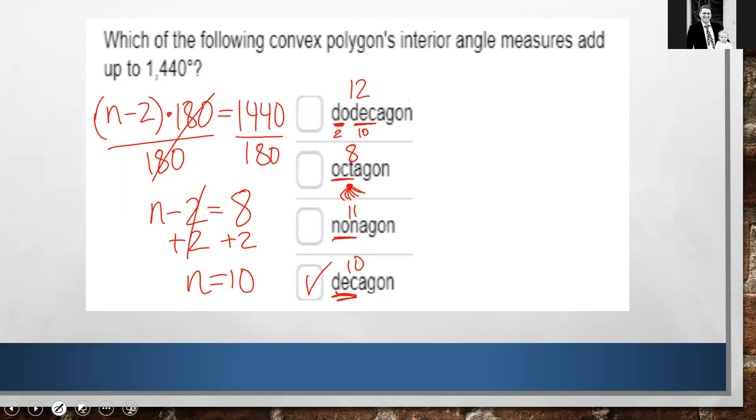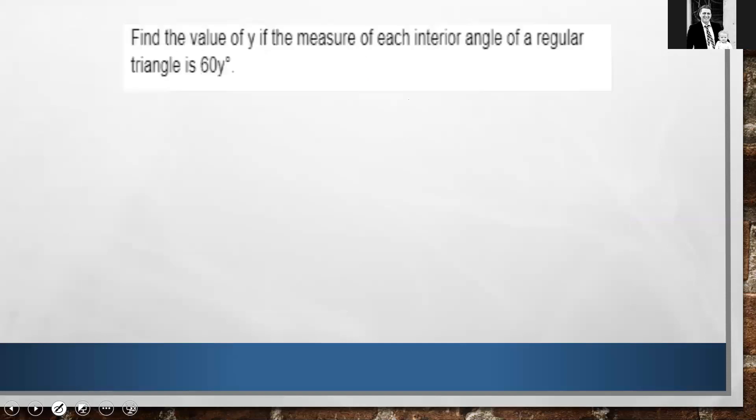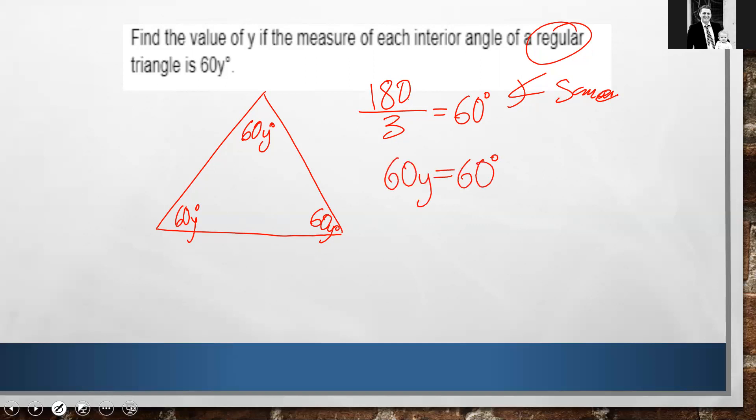Now let's find the value of y in the measure of each interior, if the measure of each interior angle of a regular triangle is 60y. Okay, regular triangle. Remember, what regular means is that all the angles are the same. And so each one is 60y degrees. Now if all the angles are the same, then I'm just going to go ahead and divide 180, because that's what the interior angles of a triangle add up to, by 3. And that's going to give me that each angle is 60 degrees. So if each angle is 60 degrees, and each angle is also 60y, then I can set 60y equal to 60 degrees, divide by 60, and that's going to give me y is equal to 1.